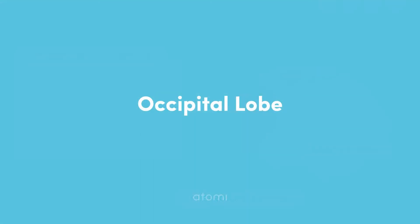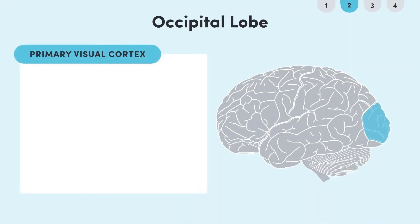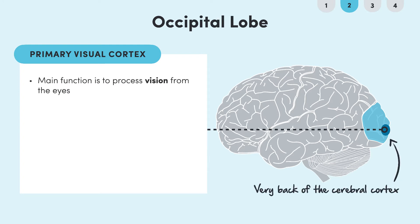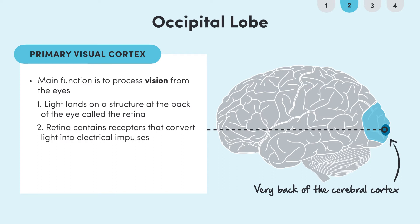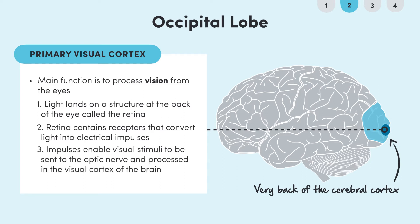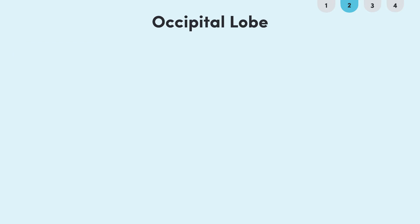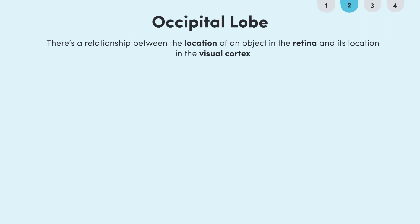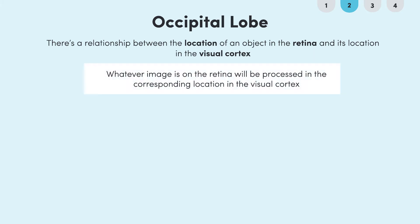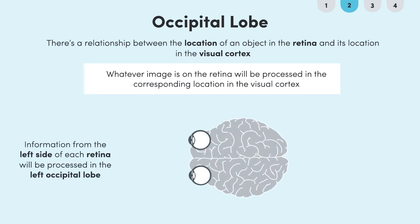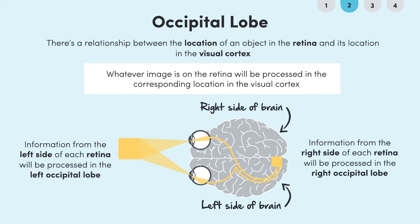The next lobe is the occipital lobe, found at the very back of the cerebral cortex. It contains the primary visual cortex and its main function is processing vision from the eyes. When light passes the eye, it lands on the retina — a structure at the back of the eye containing receptors that convert light into electrical impulses. These impulses enable visual stimuli to be sent to the optic nerve and processed in the visual cortex. Importantly, there is a visual map translated from the eye to the brain: information from the left side of each retina is processed in the left occipital lobe, and information from the right side is processed in the right occipital lobe.